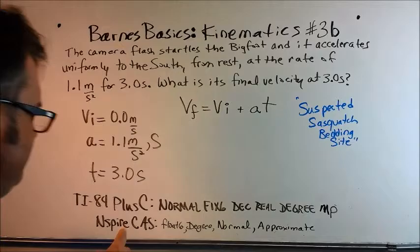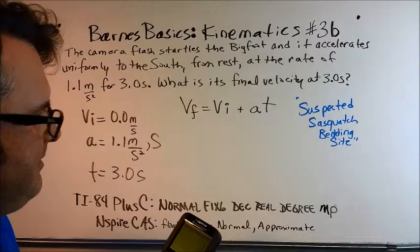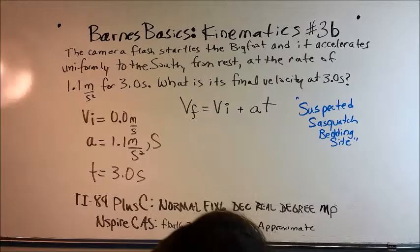And if you are using the TI-Inspire CAS, if you hit On or Home and then if you went to Settings which is 5, click on that. Go down to Document Settings. Make sure that you have Float 6 Degree Normal and Approximate listed. That way you will have the best experience possible as we move through this problem.